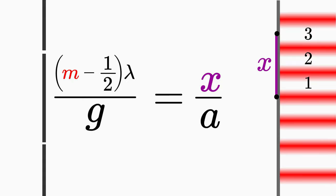To determine m, you count in this case all dark fringes to the dark fringe that is at distance x from the center.